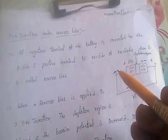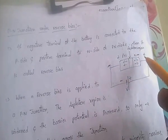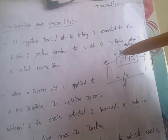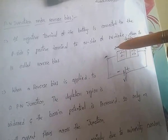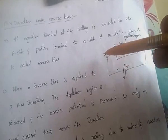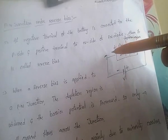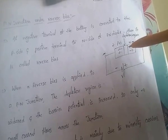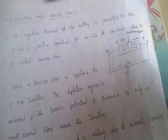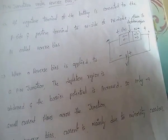Under reverse bias, whenever the P-type terminal is connected to the negative terminal of the battery and the N-type terminal is connected to the positive terminal of the battery, it is called reverse bias. In this condition, both carriers are in opposite directions, so the negative terminal attracts positive carriers and the positive attracts negative carriers, meaning the width of the depletion region increases and the barrier potential increases.